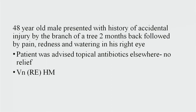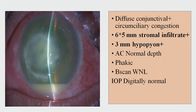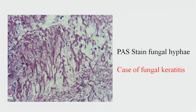We will now discuss some corneal pathologies where histopathology has a very important role to play. A 48-year-old male presented with a history of accidental injury by a tree branch two months back, followed by pain, redness, and watering in his right eye. Topical antibiotics elsewhere provided no relief. Vision was hand movement close to face; perception and projection of light were present. Examination showed diffuse conjunctival and circumciliary congestion, a 6 x 5 mm stromal infiltrate with a 3 mm hypopyon, normal anterior chamber depth, and normal B-scan and pressure. Histopathology confirmed fungal keratitis with fungal hyphae seen in the photograph.